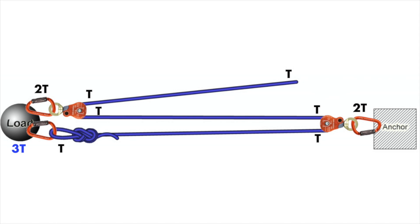Before we're done, we can sanity check our results. If we draw an imaginary line down the center of our system and add the tensions leaving the system on both sides — ignoring the total of the load, because that would be double counting — they should be equal. On the left we have 2T from the pulley and T from the figure of 8, for a total of 3T on the left. On the right we have 2T at the pulley and T on the haul line, also giving us a total of 3T. It's not impossible for this check to turn out okay but for our analysis to still be wrong, but it's an easy thing we can do to check our analysis, and it makes it pretty unlikely we've made an error.